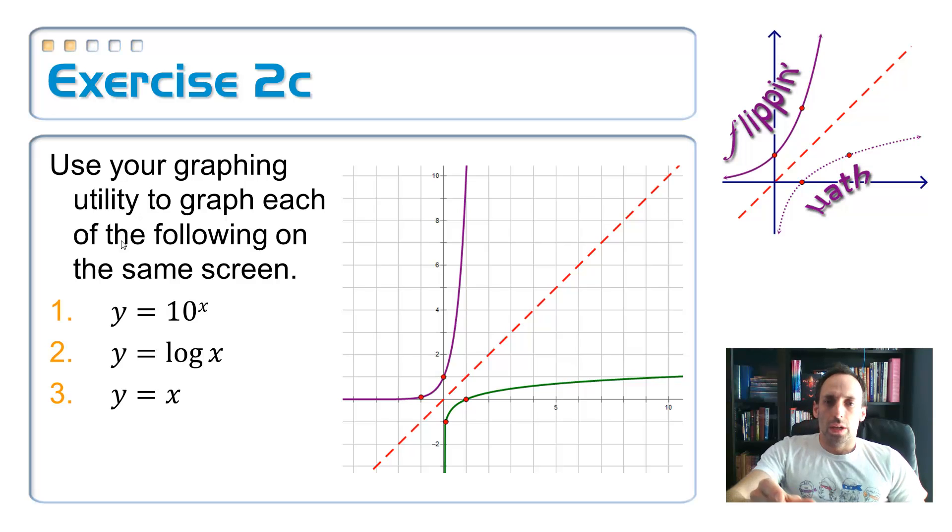So, for example, if you have the point (0, 1) on the purple graph, you have the point (1, 0) on the green graph. (1, 10) on the purple graph is (10, 1) on the green graph. These things are inverses of each other. So you can see, there on the left-hand side, 10 to the x and log of x are inverses. Does this graph kind of look familiar? Look over here at the flipping math logo. This is something we've been building to all year long.